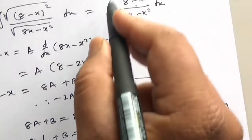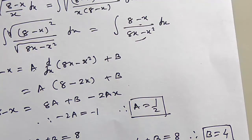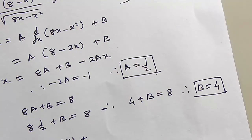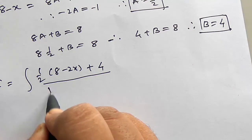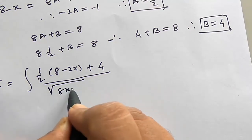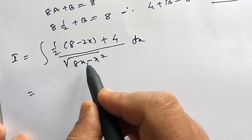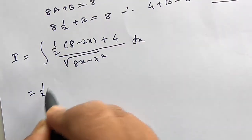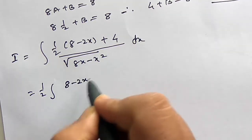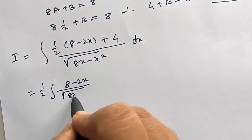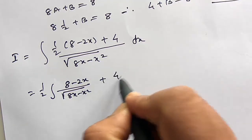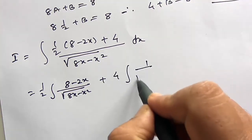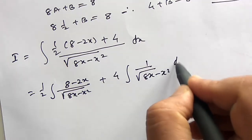The integration I becomes: integration of [(1/2)(8 − 2x) + 4] / √(8x − x²) dx. Splitting into two parts: (1/2) ∫(8 − 2x)/√(8x − x²) dx + 4 ∫1/√(8x − x²) dx. We call these I₁ and I₂ respectively.